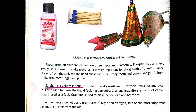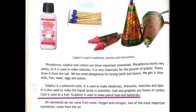Sulfur is a non-metal that is yellowish in color. It is used to make medicines, fireworks, matches, dyes, and the acid in batteries. The two forms of carbon are coal and graphite. Coal is a black substance used as fuel for burning and for generating electricity. Graphite is used to make pencil lead and also to make batteries.